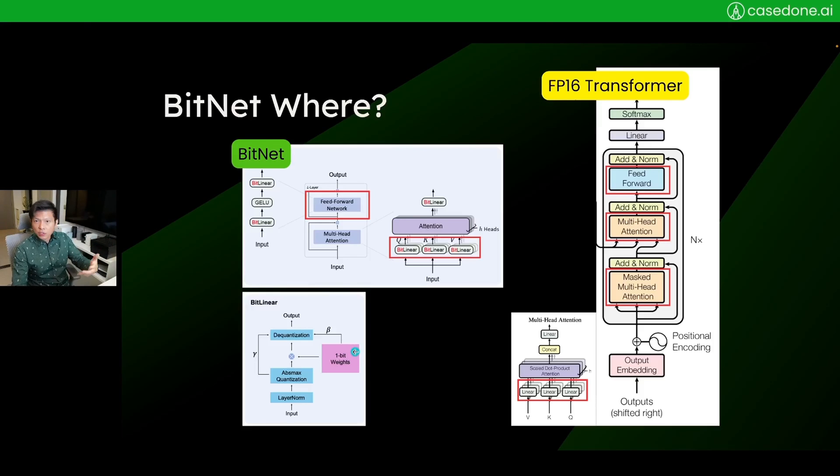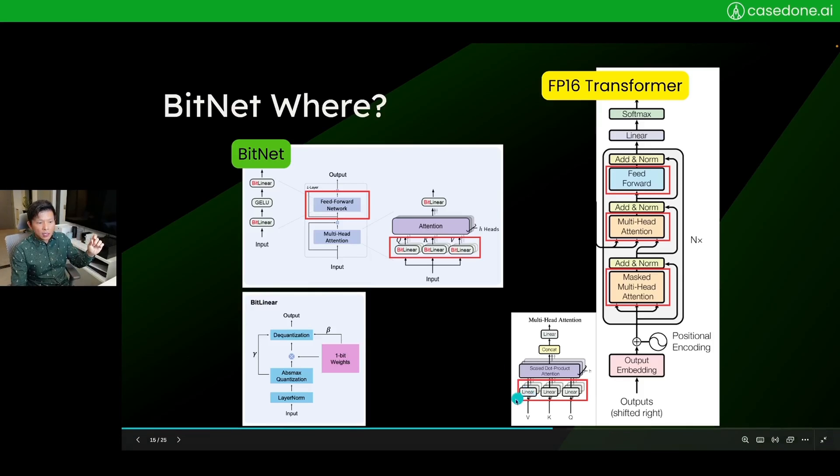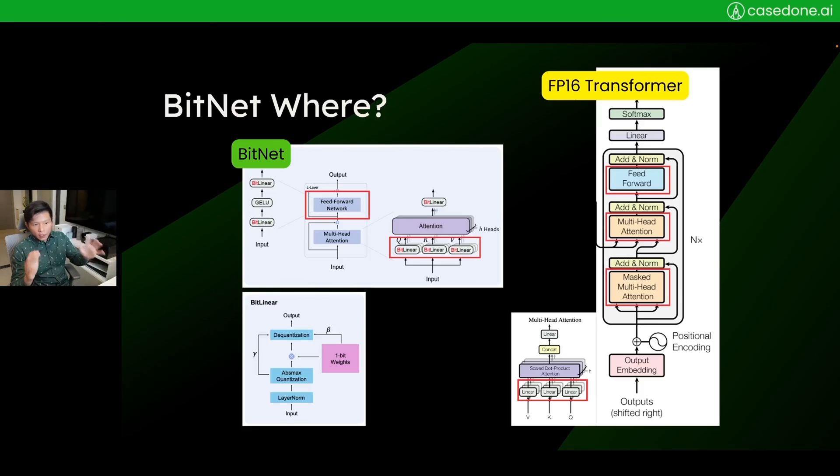The way the researchers have done is they actually replace the linear operation in the transformer with the bit linear transformer, and that's it. They also have provided some implementation examples in PyTorch and made it available on GitHub, so you can actually go there, pull the code, and try to implement BitNet yourself.